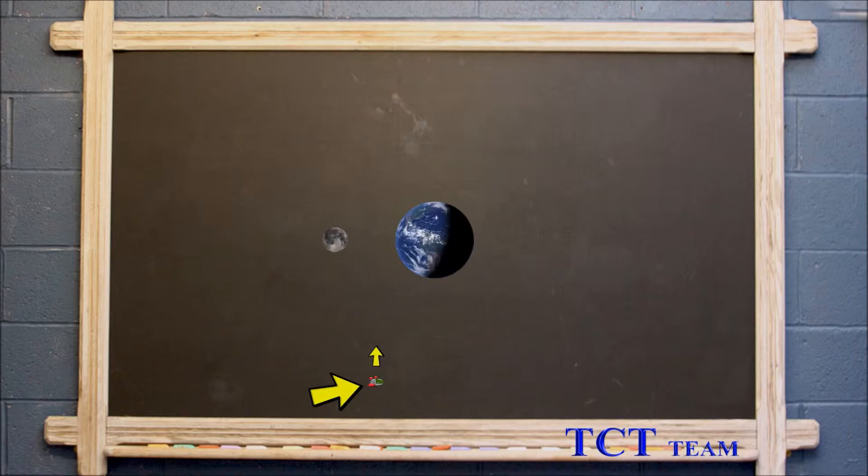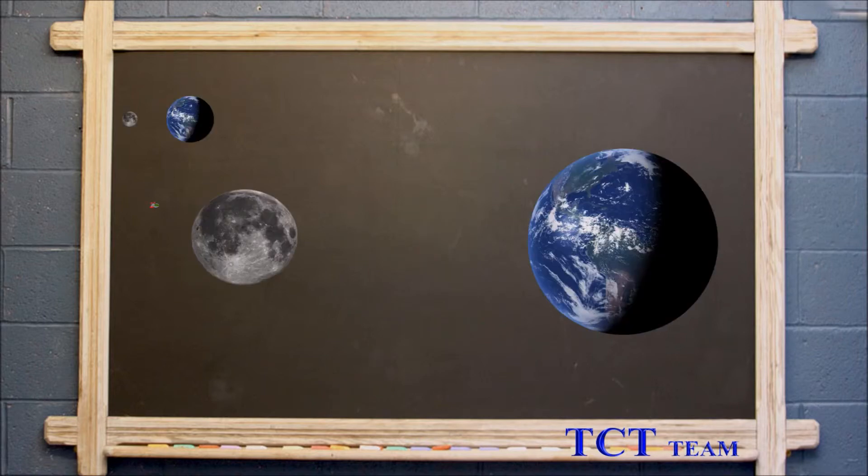As an observer looking from the side of the system, we see this, where the linear distance is 384,400 kilometres.